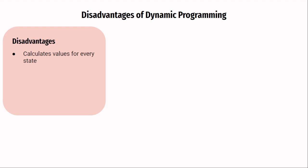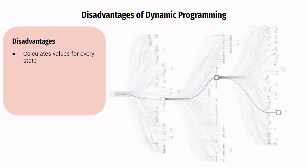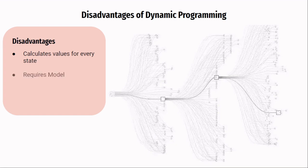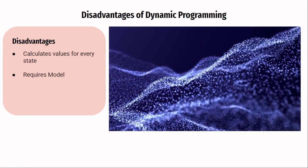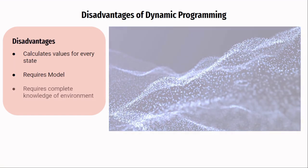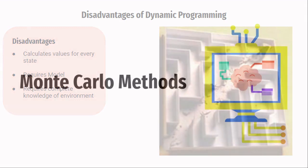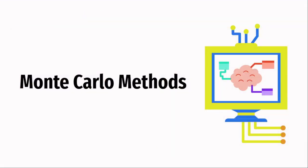But dynamic programming has very big problems. First, it calculates the values for every state possible, which may not be feasible when the state space is large — for example, chess has a huge state space. Second, dynamic programming requires a model of the environment, which might not be available for all environments. Third, dynamic programming assumes complete knowledge of the environment; if your model does not encode complete information, these methods can go haywire. Because of these problems and computational infeasibility in large problems, we move to the next class of methods which sample experience from the environment and learn from that — called Monte Carlo methods.